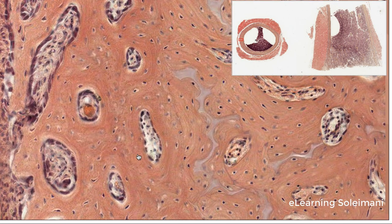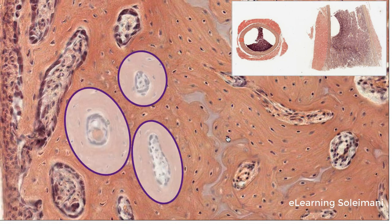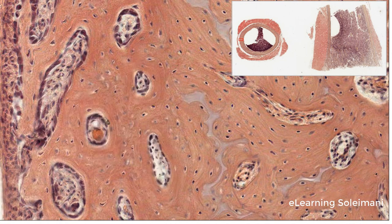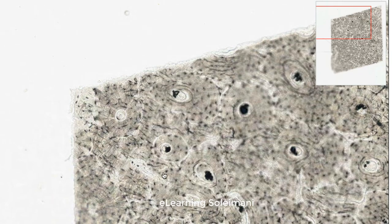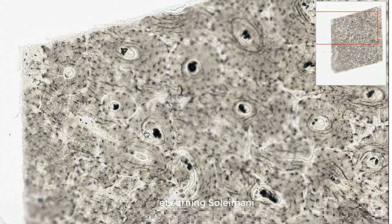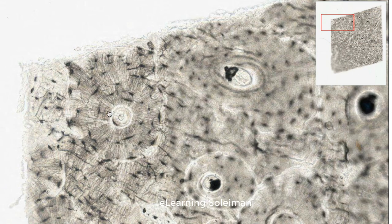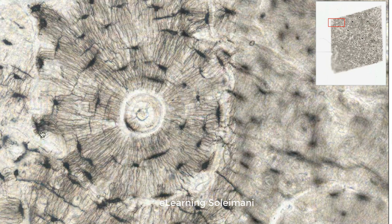Between the periostium and endostium there are Haversian systems, in which osteocytes are arranged in concentric circles around a Haversian canal containing blood vessels and nerves. In the ground section there is no need to remove the mineral, so that the bone in the section contains both the mineral and the collagen that form most of the bone structure.